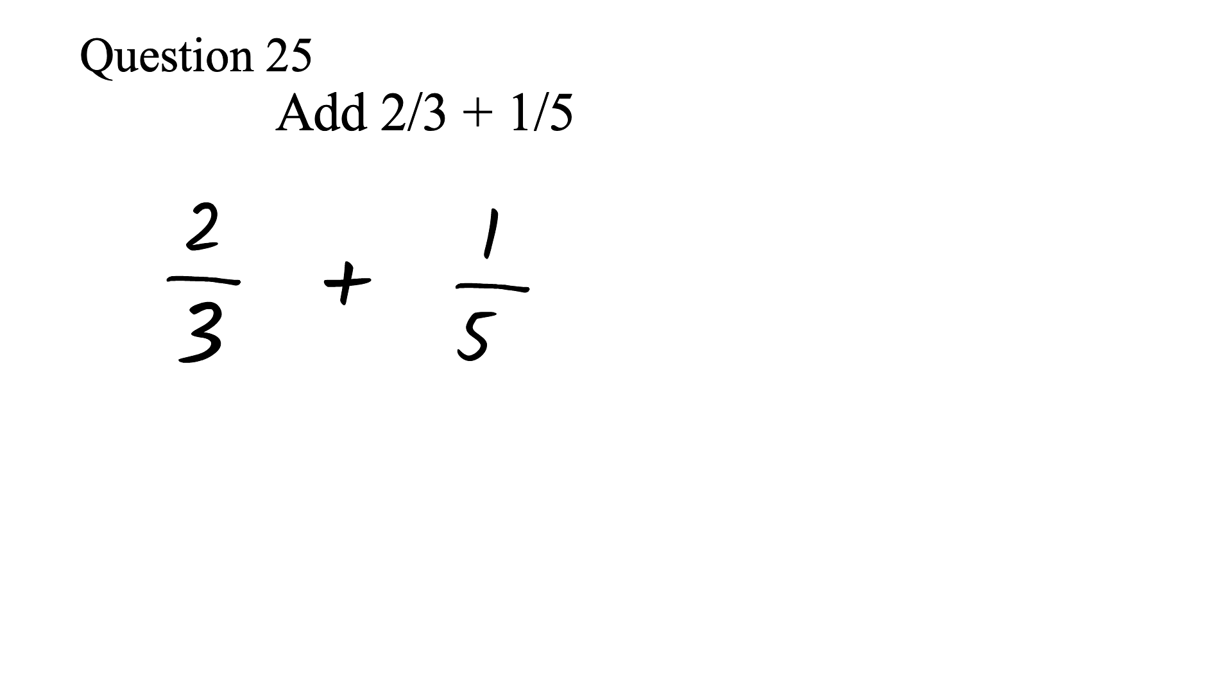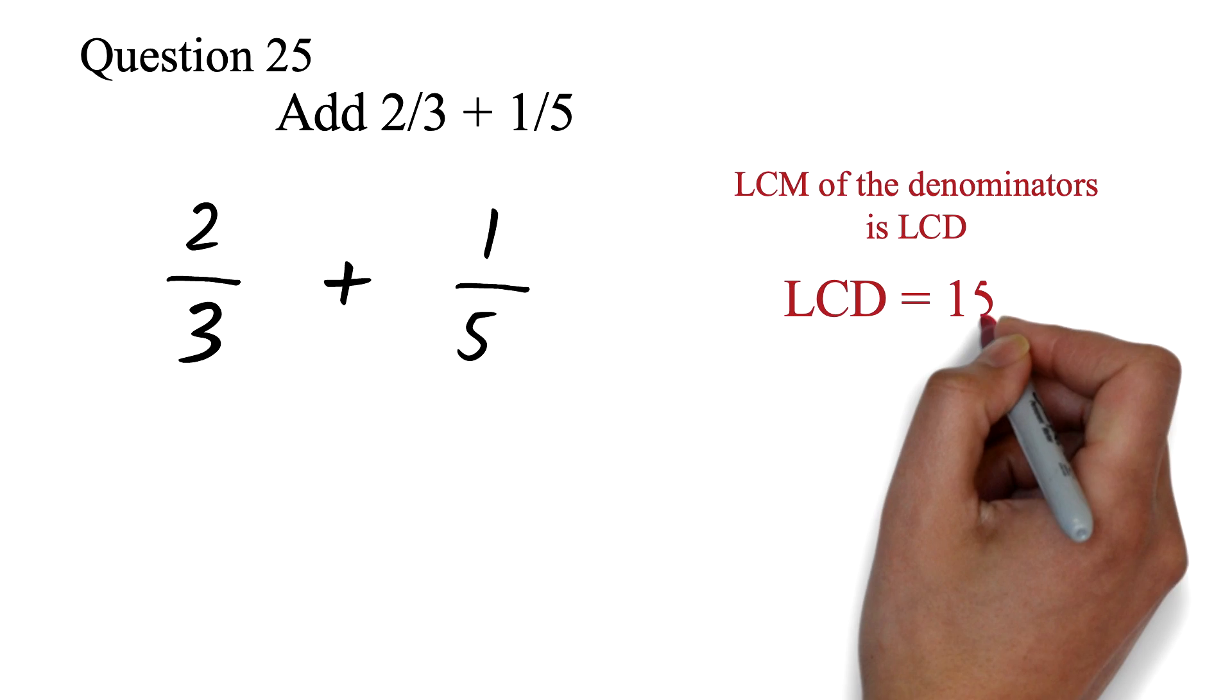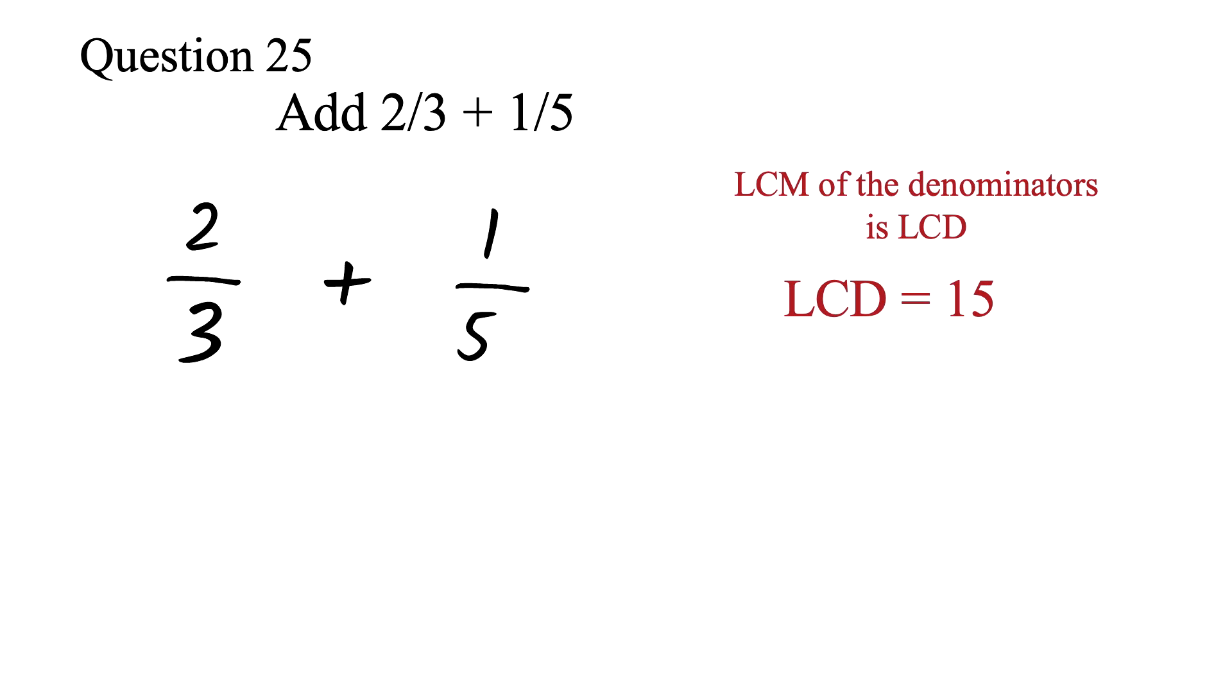Method 2 is the LCM method. The format is exactly like what we looked at in question 23 from the previous video. Here we'll find the LCM of the denominators 3 and 5. We know that the LCM of the denominators is LCD. This is 15. We looked at three ways of finding the LCM in question 21. You can refer to it if you need a refresh on finding the LCM.